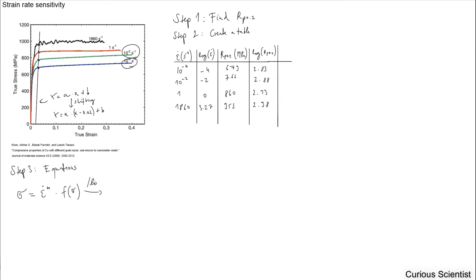Then you can do a mathematical trick here. You take the log of this equation. So the following will be the result: log sigma equals M times the log of the strain rate plus the log of this F sigma. And now you see why we needed the logarithm of these different values. Here the sigma will be the RP 0.2, and then this is given.